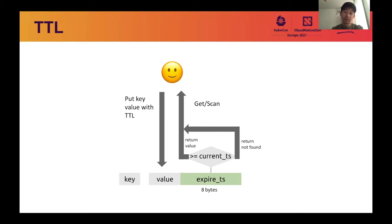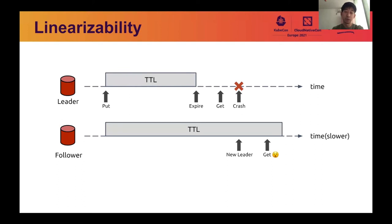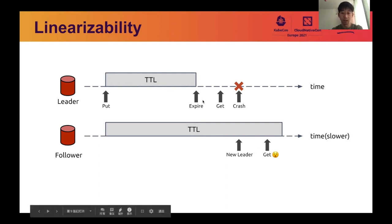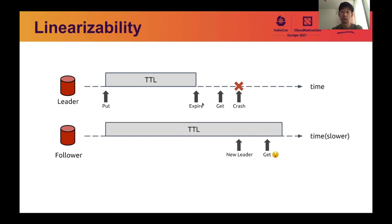That seems like all for it, but in a distributed system, we should take linearizability into account. The clocks in different TiKV instances may not be synchronized. Consider the case of getting an expired key on the leader. The leader is transferred to another instance with a slow clock due to some reason such as a crash. A subsequent get on the key may return a value, which breaks linearizability. In this case, we can utilize the global monotonically increasing timestamp dispatched from the placement driver, which is used for transactions, though considering the performance overhead, it is not used by default.